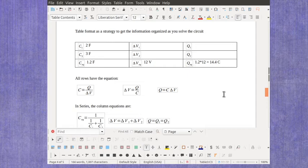And if I take that value, I find that the 1.2 farads times the 12 volts gives me 14.4 coulombs. Again, one of my columns will be the special column, and for a series circuit, that's the charges.